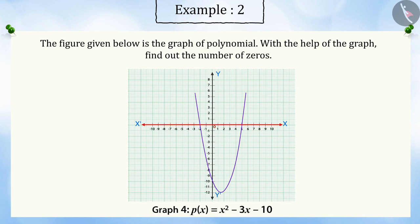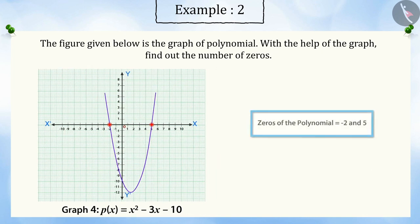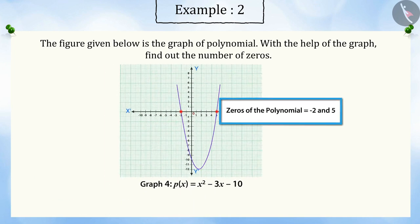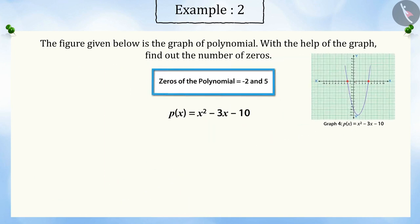Here, the graph intersects the x-axis at two points. Hence, there will be two zeros of this polynomial, minus 2 and 5. You can verify the result by replacing the zeros in the polynomial.